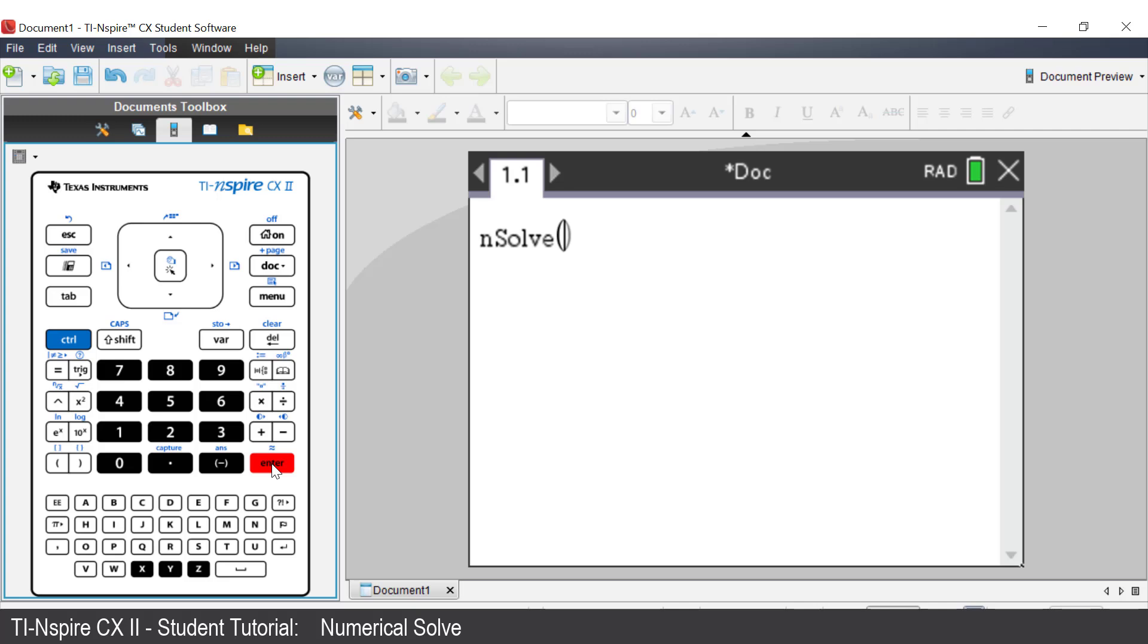On the screen you'll see nsolve brackets. To solve an equation, enter the equation. For example, 3p plus 7 equals 22.